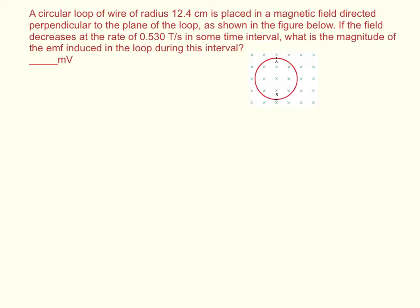A circular loop of wire of radius 12.4 centimeters is placed in a magnetic field directed perpendicular to the plane of the loop, as shown in the figure below.